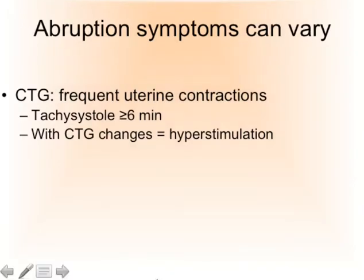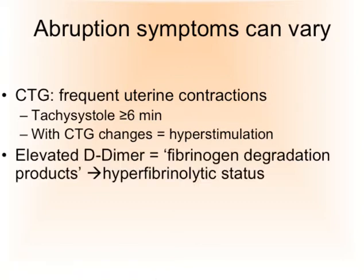The symptoms can vary, and sometimes the CTG can point indirectly at an abruption through frequent uterine contractions. The definition of tachysystole is more than or equal to six contractions per minute. If tachysystole goes together with CTG changes, per definition we refer to that as hyperstimulation. Sometimes we can check bloods — the D-dimer — which tells us there is increased use of fibrinogen degradation products, pointing at a hyperfibrinolytic status. An elevated D-dimer can sometimes point at a sneaky partial abruption without any other typical symptoms.